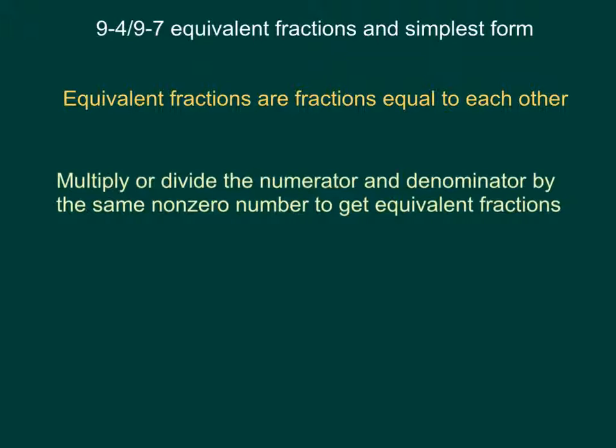For example, if we had 3 fourths, an equivalent fraction to that would be 12 over 16. Because if you multiply the numerator and the denominator of 3 fourths by 4, then it is 12 over 16.